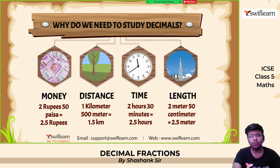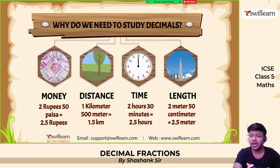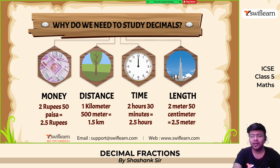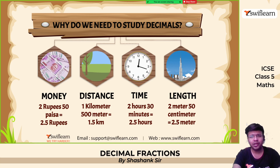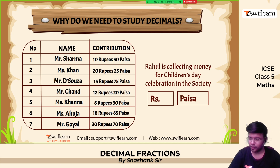Now why do we need to study decimal numbers? A lot of transactions in banks, malls, and online shopping take place in paisas, which are decimal numbers. Distance traveled by spaceships — for example, when traveling from Earth to Mars — also involves decimals. Time and launching something also involves decimals. The length of some buildings as well. So decimals may look small but for big things they are very significant.